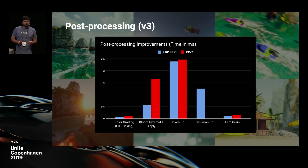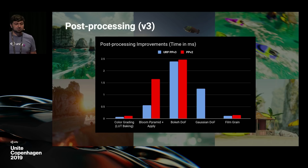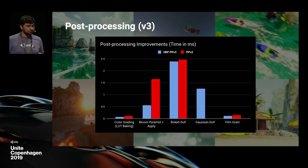Looking at performance differences between PPV2 (previous stack) and PPV3: these are FX time numbers on a Nintendo Switch, and across the board PPV3 is more optimized. Bloom pyramid plus apply shows about a 3x performance increase. We also introduced a new Gaussian depth of field mode that improves performance over the bokeh depth of field mode, which is still available. Post-processing V2 is now deprecated with Universal Render Pipeline — when you upgrade, you'll need to upgrade your post-processing effects.